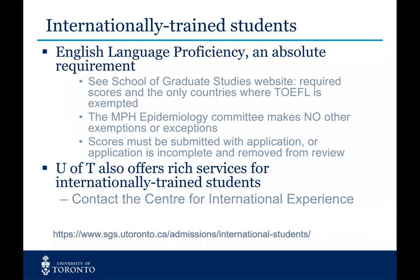For internationally trained students, English language proficiency is a requirement. There is a ton of information about this on the SGS website, which also includes equivalency grades for those looking to see whether their grades at their international institution meet the minimum requirements by SGS standards. All international universities are listed there, and it tells you how to translate your grades into those equivalent to a Canadian university.